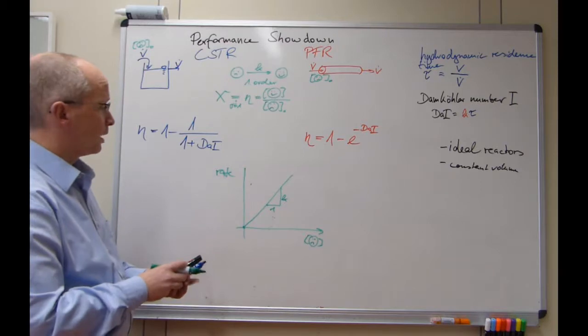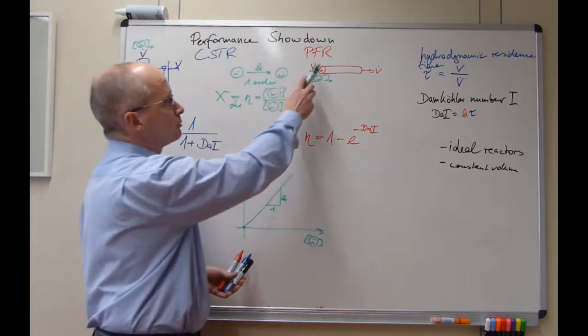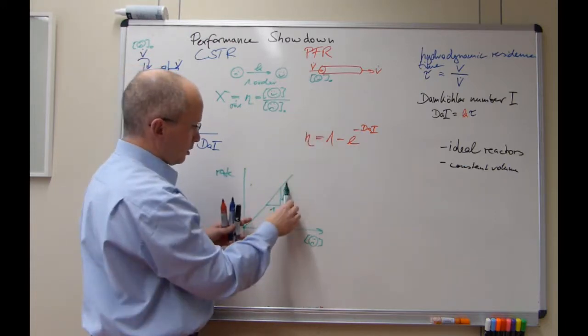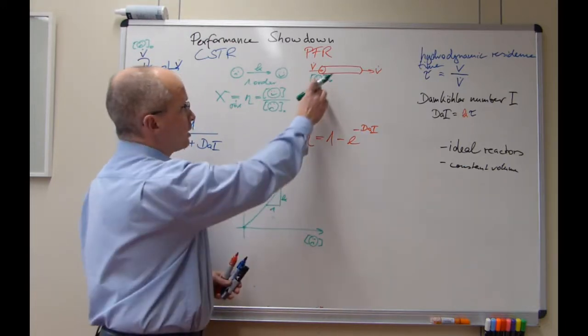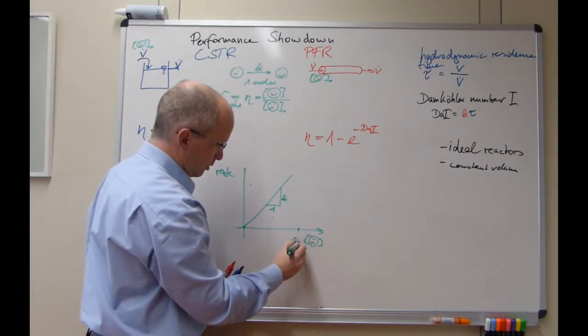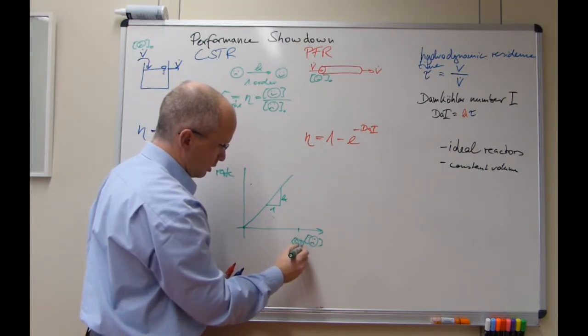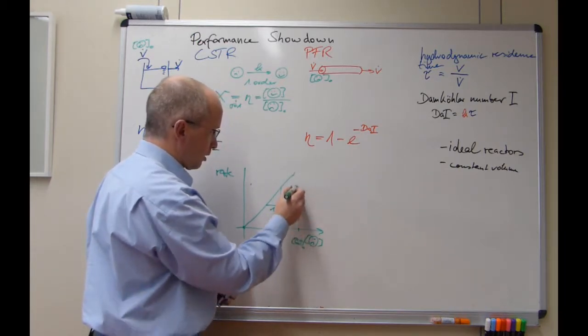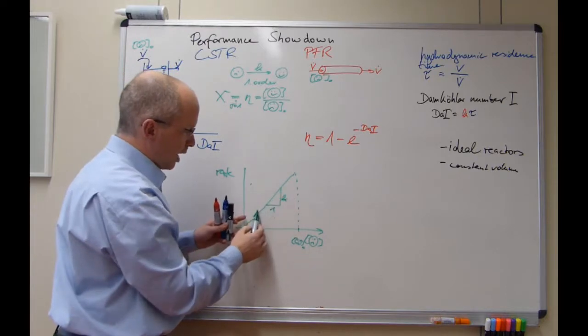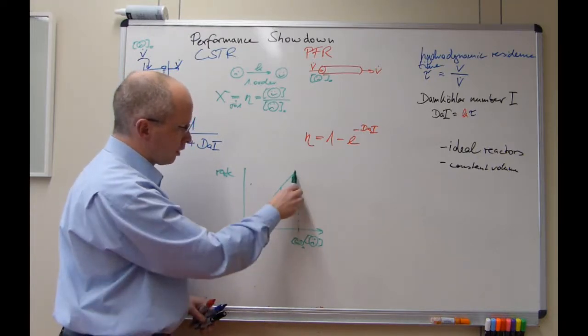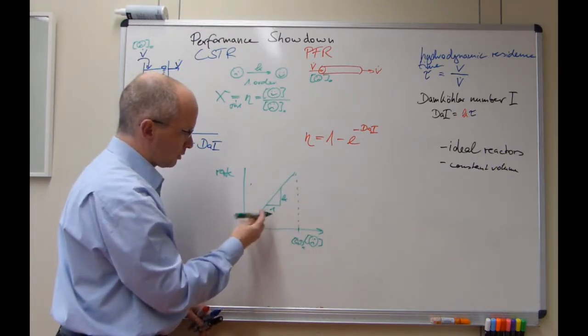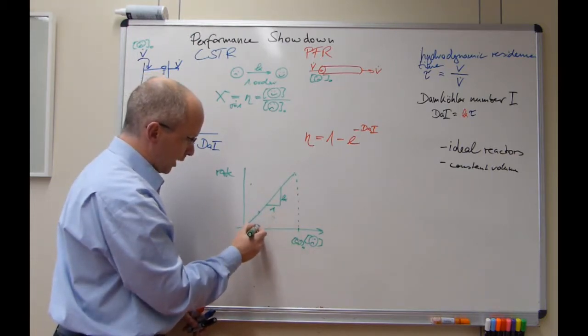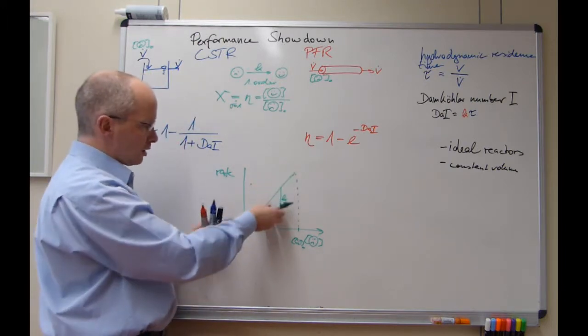What happens in the plug-flow reactor is that you actually will be able to use the full extent. You start here, if this is your initial rate. You will use a large proportion of these higher rates. This will then be your actual rate at the end of the reactor.